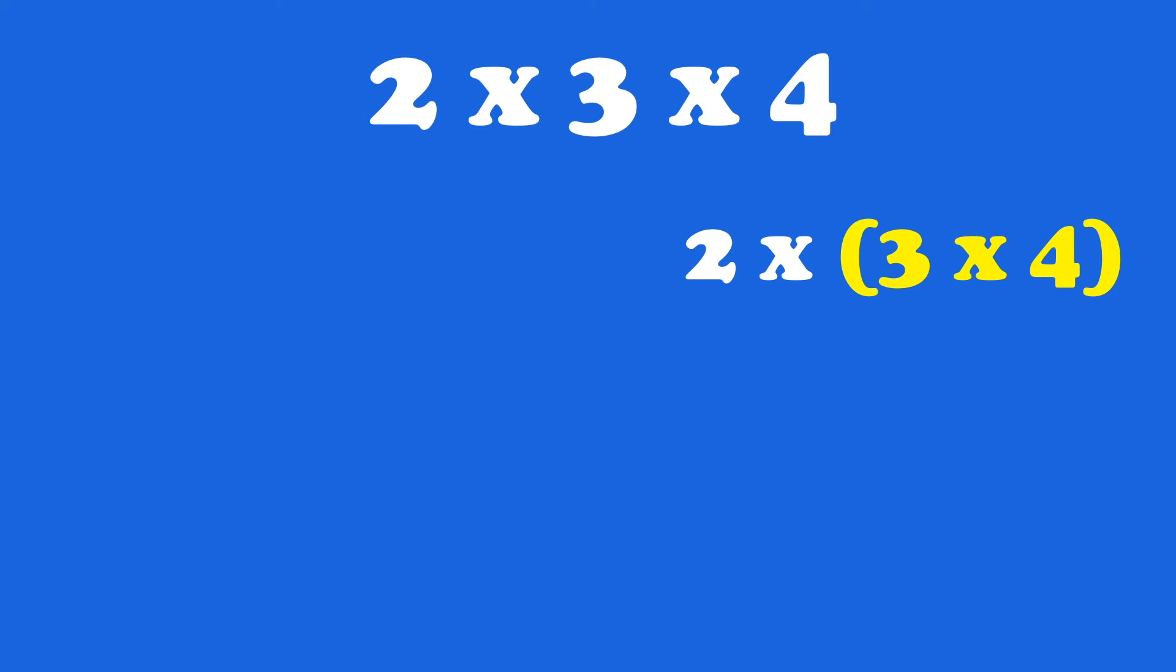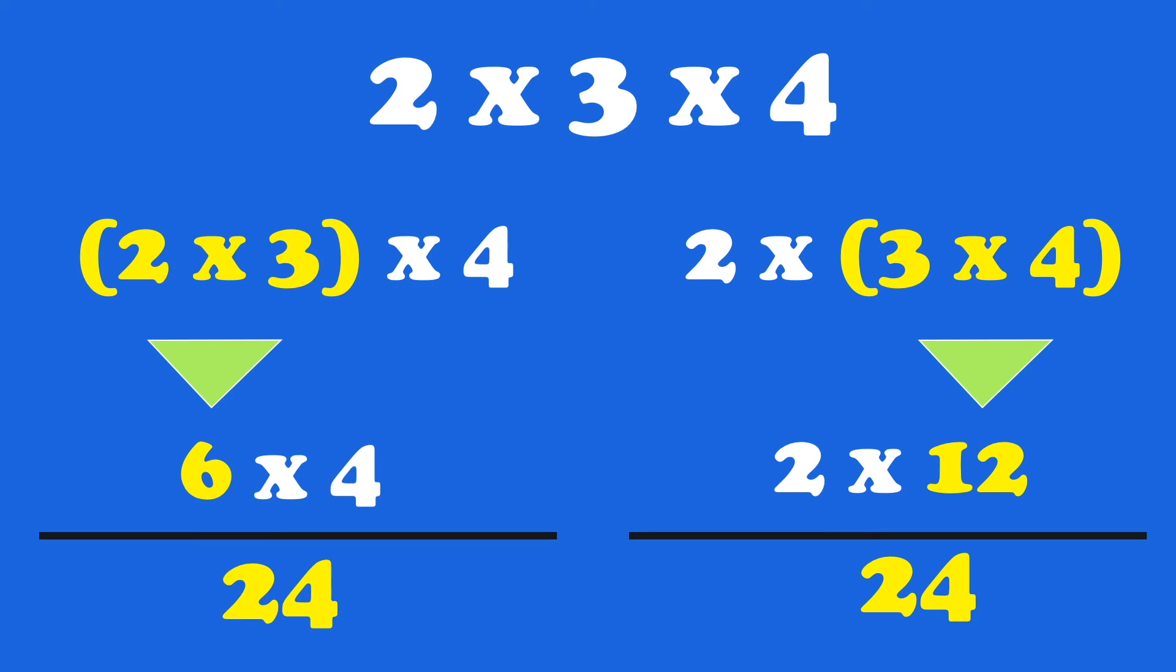3 and the 4 are grouped, and times the 2 which is separate. And 2 times 12 equals 24. It's the same answer in both.